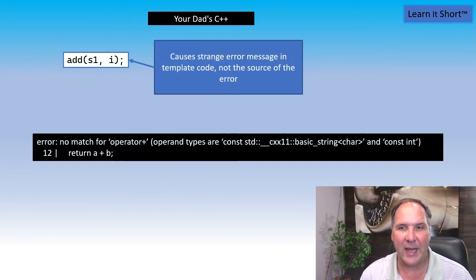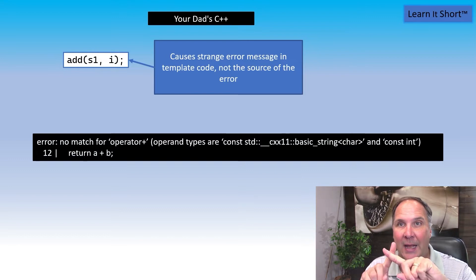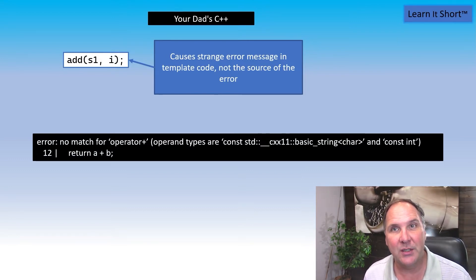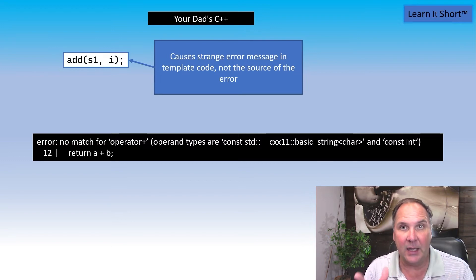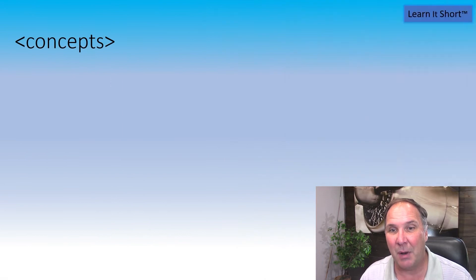Let's go back to our dad's C++. If we pass in things that don't work, things that don't add together with the plus sign, you're going to get a strange syntax error from your compiler. The error is going to be in the generated template code, so we have to dig around to figure out what they're actually talking about. Let's talk about how we can fix that in modern C++.